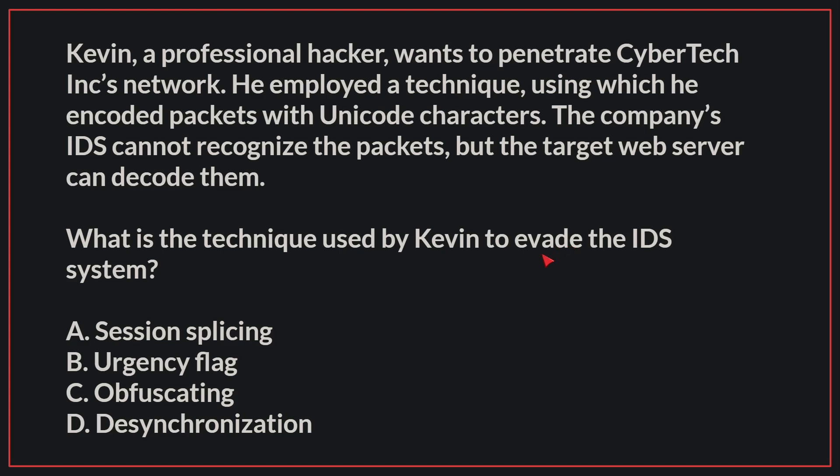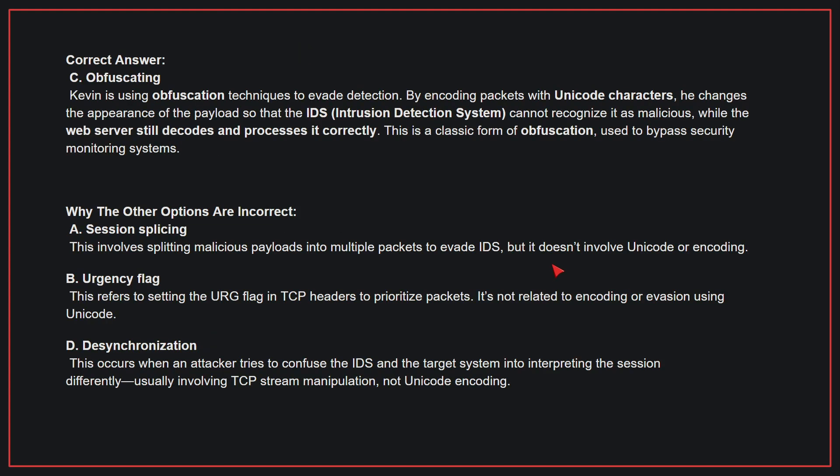The correct answer is C: Obfuscating. Kevin is using obfuscation techniques to evade detection. By encoding packets with Unicode characters, he changes the appearance of the payload so that the IDS cannot recognize it as malicious, while the web server still decodes and processes it correctly. This is a classic form of obfuscation used to bypass security monitoring systems.